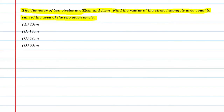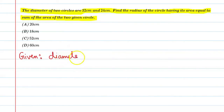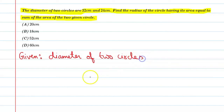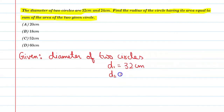Let's start this question. Given: diameter of two circles — d1 is equal to 32 centimeter, and the second circle d2 is equal to 24 centimeter.